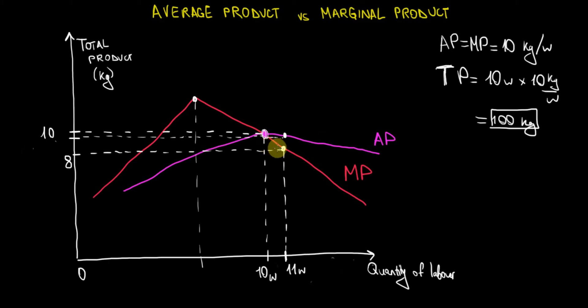Now suppose that when we hire one more unit of labor, one more worker, we go from 10 to 11. The marginal product of the 11th worker is going to be 8 kilograms. Suppose that the marginal product is going to be 8 kilograms. The additional kilograms that the worker harvests is going to be 8.